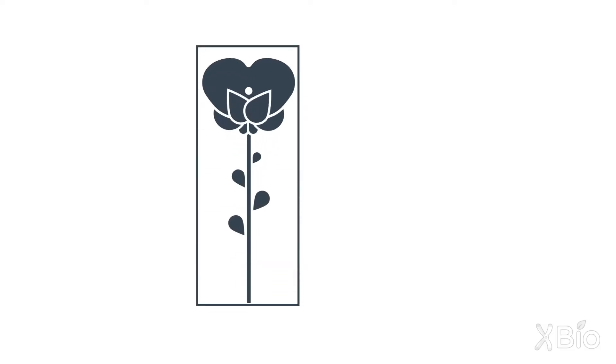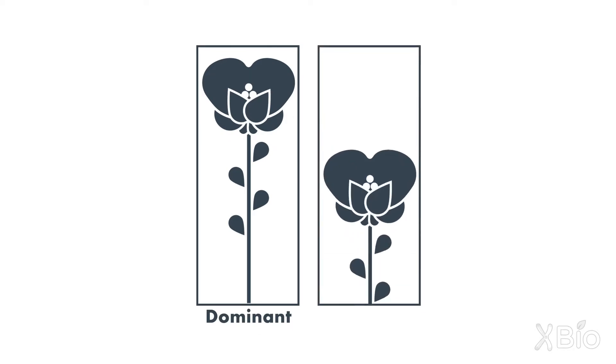And in fact, Mendel used that word. He said tall is dominant over short. And the word he used to describe short is recessive. And what's really remarkable is, to this day, we use these terms to describe the behavior of genes in crosses, which is amazing.